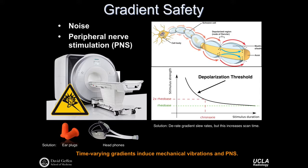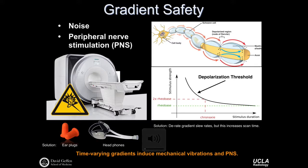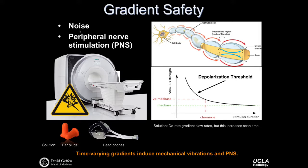Another consideration is the noise from the gradients. The gradient systems are quite noisy and can lead to both hearing damage and peripheral nerve stimulation. The gradients are turned on and off at high rates — switching gradients every TR, even several times within a TR — causing mechanical vibration that leads to acoustic noise generation. This is a difficult engineering problem not adequately solved at this point, so the simplest solution is that patients wear earplugs and headphones, the headphones also allowing for two-way communication.